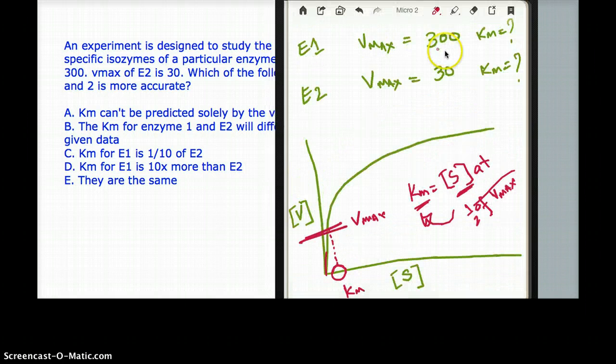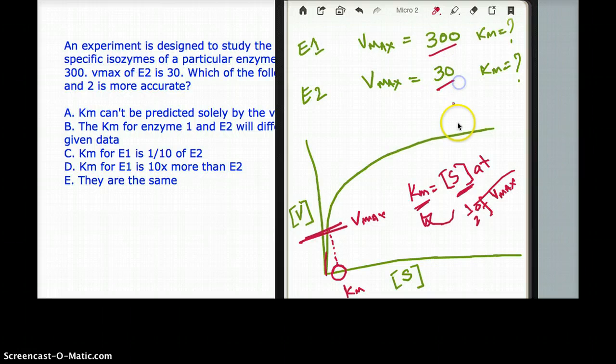Now in this question, you have Vmax. And what is Vmax? Vmax is the velocity. And what determines velocity? It's the affinity of the enzyme. So the affinity of the enzyme has really no relationship with the Km.